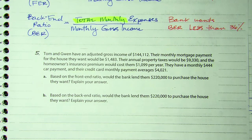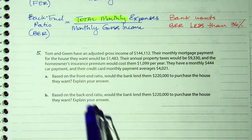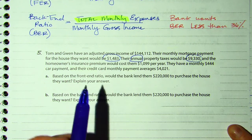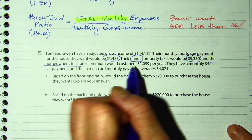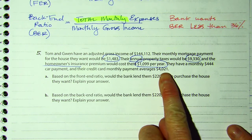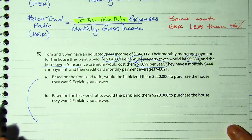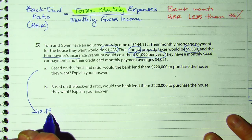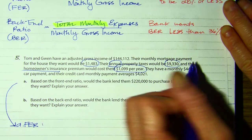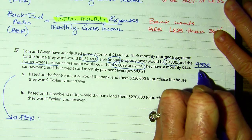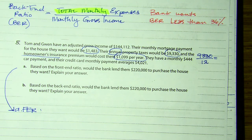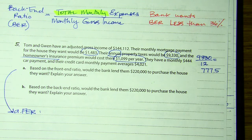So Tom and Gwen have an adjusted gross income of $144,000. Their monthly mortgage payment would be $1,483. Their annual property taxes would be $93.30. The homeowner's insurance costs them $10.99 per year. They have a monthly car payment and a credit card. So let's first do the front-end ratio for part A. I need to figure out their monthly property taxes: $93.30 divided by 12 gives $77.75 per month.